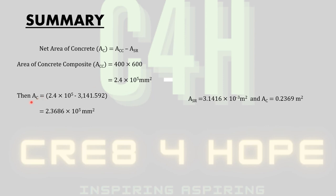Thus AC, which is basically the net area for concrete, will be equal to 2.4 times 10 to the power of 5 minus 3141.592. That will yield a net area of 2.3686 times 10 to the power of 5 millimeters squared.